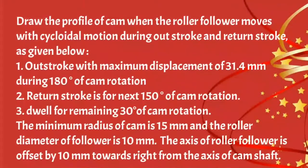Now first I will read the given problem. Draw the profile of cam when the roller follower moves with cycloidal motion during outstroke and return stroke. Outstroke with maximum displacement of 31.4 mm during 180 degrees of cam rotation. Return stroke for the next 150 degrees, and dwell for the remaining 30 degrees. The minimum radius of the cam is 15 mm and the roller diameter is 10 mm. The axis of roller follower is offset by 10 mm towards right from the axis of camshaft.